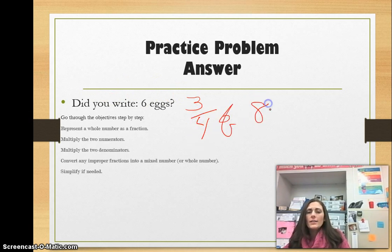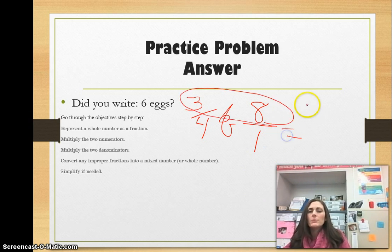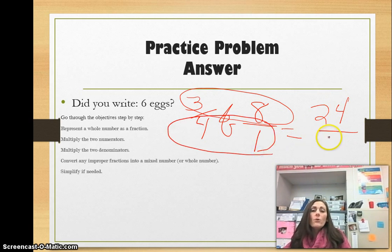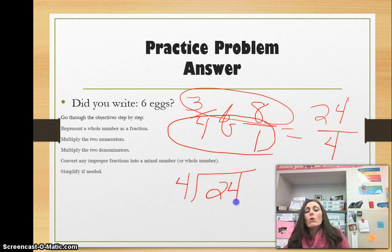Three-fourths of eight. The first thing we need to do is make our whole number a fraction. So we're going to put a one as the denominator. Then we're going to multiply the numerators. Eight times three is 24. Then we're going to multiply the denominators. Four times one is four. And now that is improper. So we need to change that into a mixed number or a whole number, I should say. So we're going to take our denominator four into 24. And four goes into 24 six times. And that is even. So that means my answer is six eggs. And I am correct.